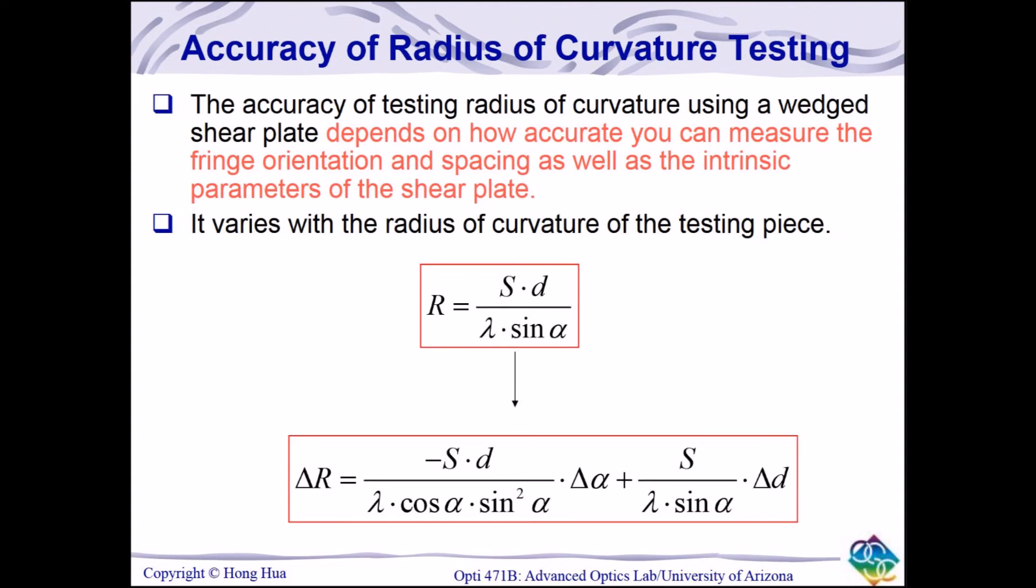Our major sources of error were the mount for our collimating lens, the protractor that we used for measuring our angle deviation, and the fact that we were supposed to be using an 825 millimeter lens, not 800.